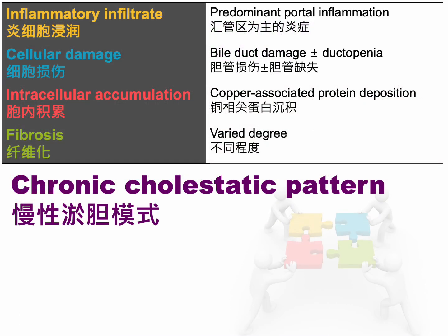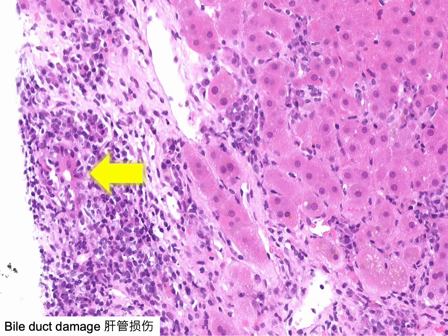Let's proceed to the final pattern of cholestatic injury, known as the chronic cholestatic pattern. This pattern is characterized by portal-based inflammation, bile duct damage, ductopenia, chronic cholestasis, and portal-based fibrosis. A portal tract exhibits a damaged bile duct with epithelial disarray and a lymphocytic infiltrate, accompanied by a marked plasma cell-rich portal inflammation.